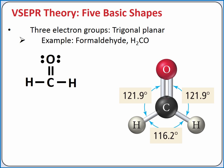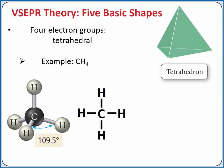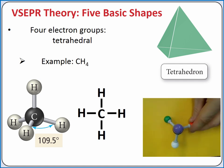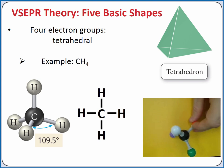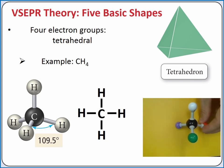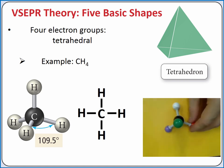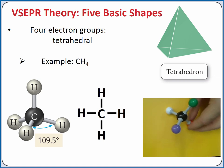If we add a fourth electron group on our central atom, the farthest we can put the four electron groups away from each other is 109.5 degrees apart, or at the corners of a tetrahedron. This geometry is called tetrahedral. Methane, or CH4, has a tetrahedral molecular geometry.